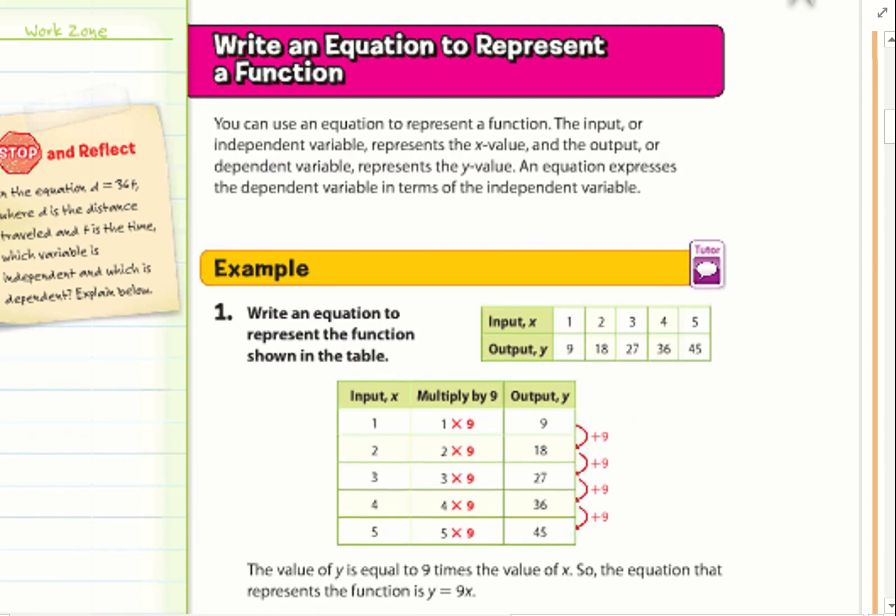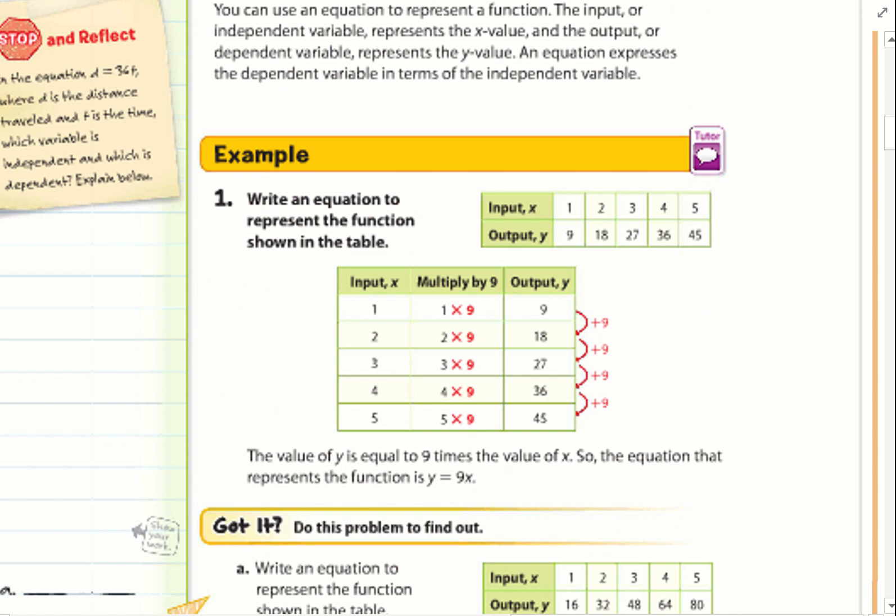Example one: write an equation to represent the function shown in the table. In our graphs, we have our input is x and our output is y. So these are going to be our ordered pairs. Since this is increasing by nine each time, we know that we are going to have 9x. So 9x is going to equal y. Because we're making a function, we're going to set it equal to y. When x equals one, y equals nine. So that is true. This is my equation, 9x equals y.